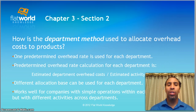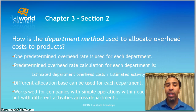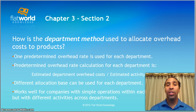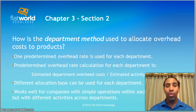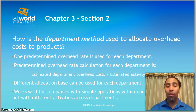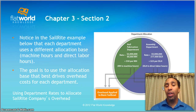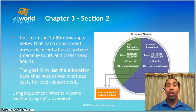How is the department method used to allocate overhead costs to products? One predetermined overhead rate is used for each department. The predetermined overhead rate calculation for each department uses estimated department overhead costs — not the whole company, just the department — divided by the estimated activity and allocation base. Different allocation bases can be used for each department. If my department is very direct-labor-hours intensive and your department is very machine-hours intensive, we use whichever is better for our department. This works well for companies with simple operations within each department but different activities across departments. The goal is to use the allocation base that best drives overhead costs — that's the cost driver, which we'll discuss shortly.